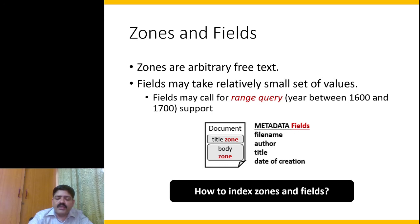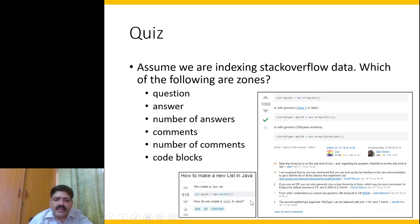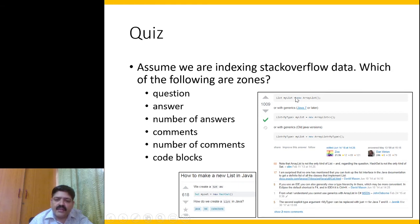The question we are going to ponder is how to index zones and fields. Here is an example from Stack Overflow: the question is 'how to make a new list in Java'. This is the title, and the actual question body describes creating a HashSet and asks how to create a list in Java. There is an answer, and along with it a variety of metadata — how many people liked the question and answer, comments, the date it was edited, and the person who edited it.